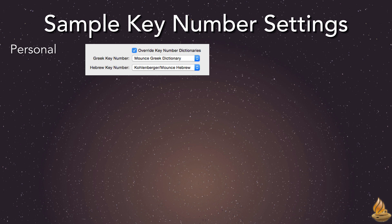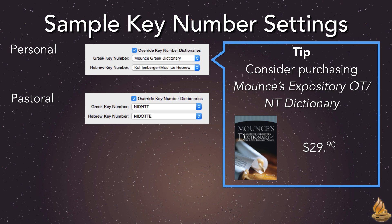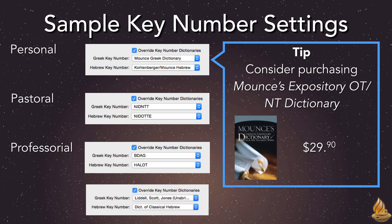Want to dig a bit deeper? Consider adding Mounce's Expository Dictionary for Old and New Testament Words for $29.90 — it covers the entire Bible and has some great articles on the most important Hebrew and Greek words. If you're a pastor and own NIDNTT and NIDOT, consider setting your defaults to these two resources for instant access to relevant, detailed information that's practical without being overly technical. If you're a professor teaching from an English text, you may want to set your defaults to the scholarly standards in the field: BDAG and HALOT, or alternately Liddell and Scott and the Dictionary of Classical Hebrew. Remember, these settings determine both what appears in Instant Details when the command key is pressed and which resource appears when the word is triple-clicked. Once we open a lexicon, we can then easily switch to other similar lexicons in sequence.